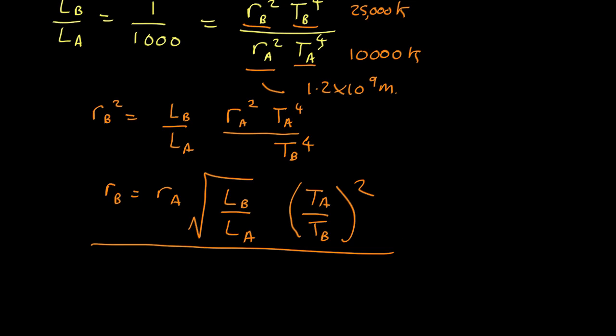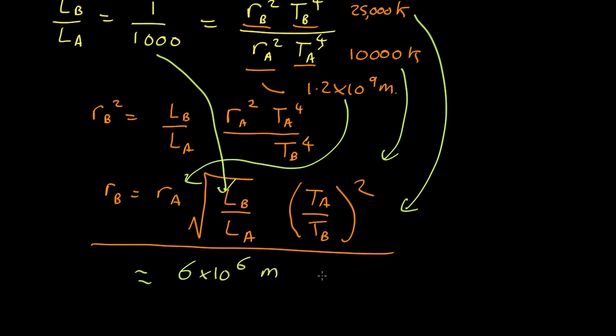Now we can substitute the numbers in. So we know r_A, we know the two temperatures, we know the ratio of the luminosities, and this comes out as about 6 × 10⁶ meters, which is 6,000 kilometers. Which is actually not star size—that's smaller than the Earth. The radius of the Earth is 6,400 kilometers. So we're talking about something with the mass of the sun in a smaller size than the Earth.